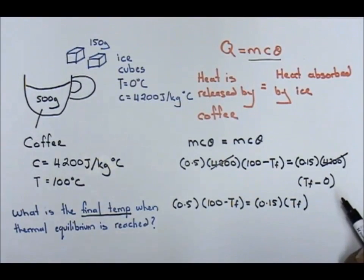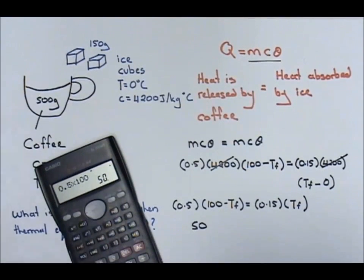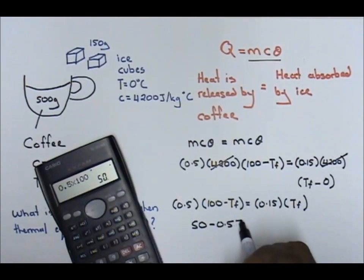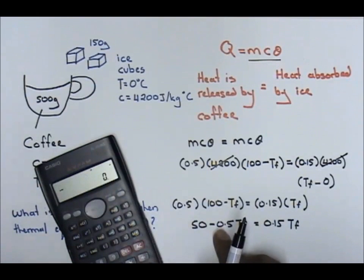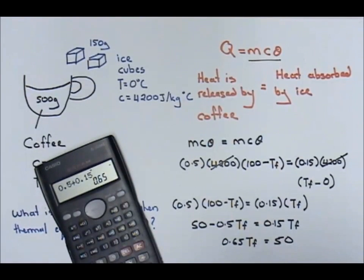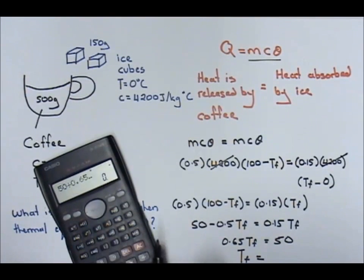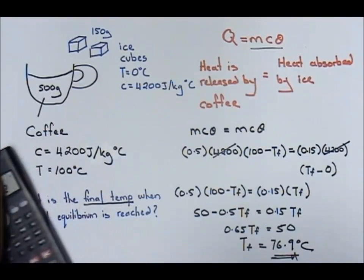Using your calculator: 0.5 times 100 gives 50, so 50 minus 0.5 TF equals 0.15 TF. Bringing the terms together: 0.5 plus 0.15 gives 0.65 TF equals 50. Therefore TF equals 50 divided by 0.65, and you get 76.9 degrees Celsius. You can see: 76.9 degrees Celsius.